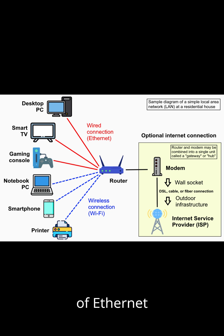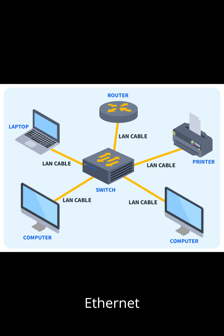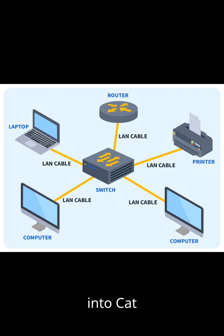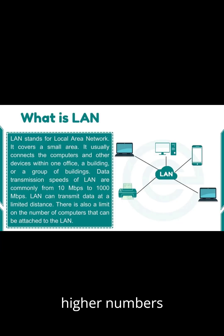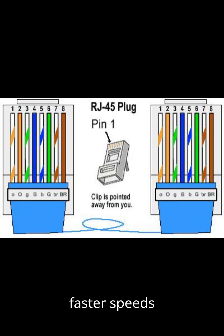Types of Ethernet LAN cables. Ethernet cables are categorized into CAT (category) types, where higher numbers generally mean faster speeds and higher bandwidth.